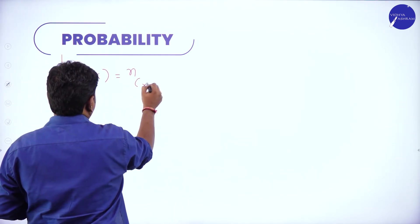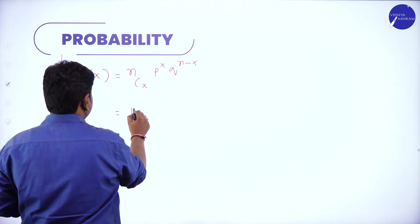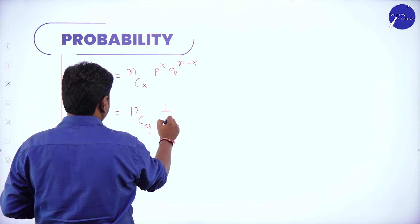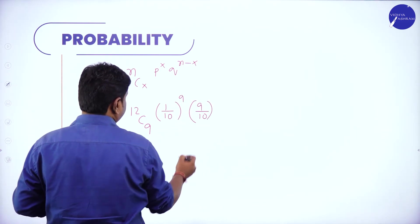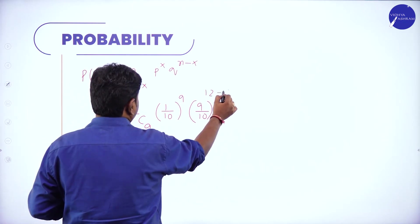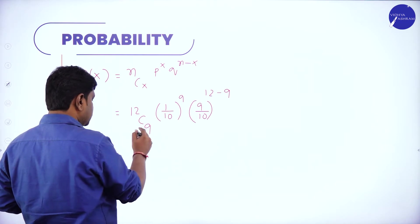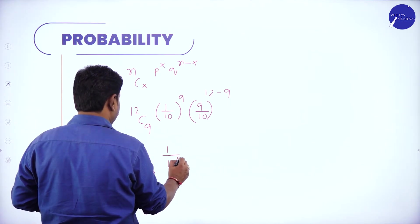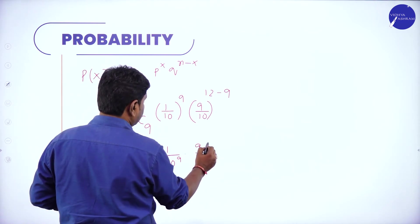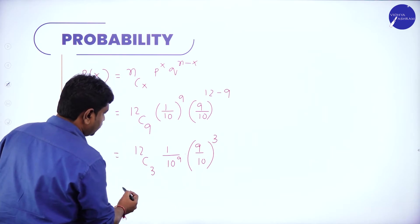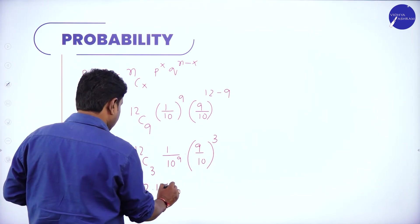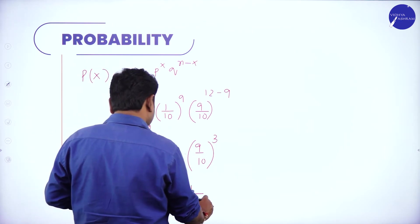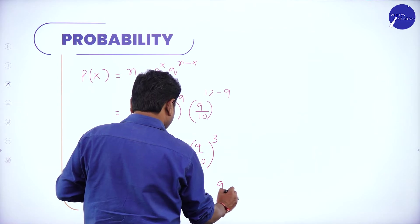Using P(x) = nCx * p^x * q^(n−x): P(9) = 12C9 * (1/10)^9 * (9/10)^(12−9). 12C9 = 12C3 = (12×11×10)/(3×2×1) = 220. Simplifying with 10 in the denominator of (1/10)^9 and the 10 in 12C3 gives 22 × (1/10)^8 × (9/10)^3.